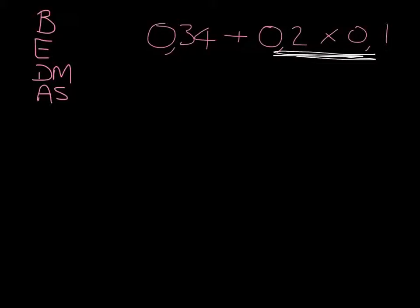So if we are given a problem like 0.34 plus 0.2 times 0.1, the way in which we do that is we first have to look and see order of operations. There aren't any brackets, there are no exponents. So the first thing I need to tackle are the division and multiplication, and here we only have multiplication. In other words, we need to do this bit of the calculation first.